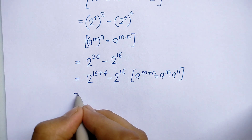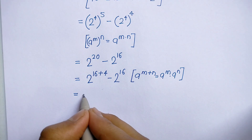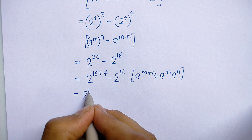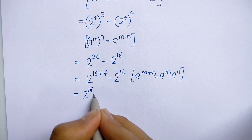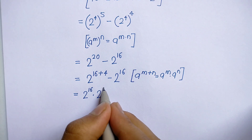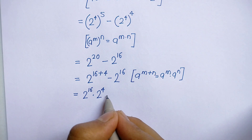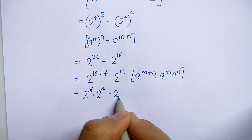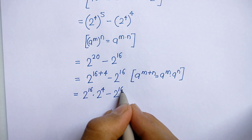By using this rule, we get 2 to the power 16 into 2 to the power 4, minus 2 to the power 16.